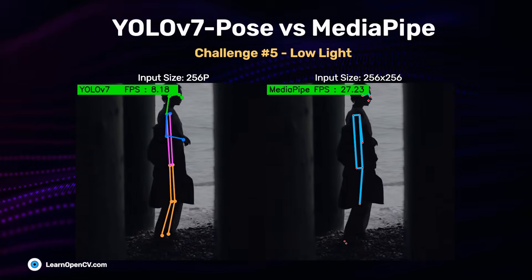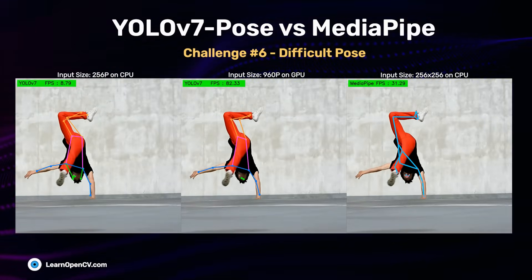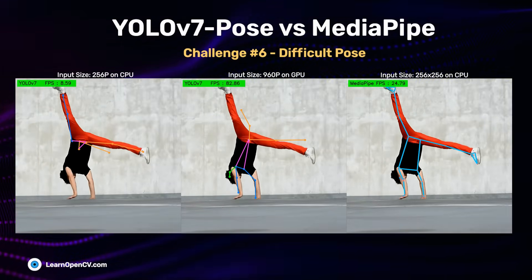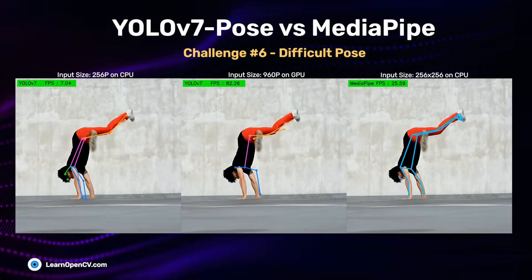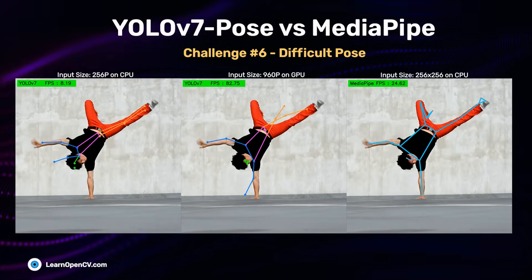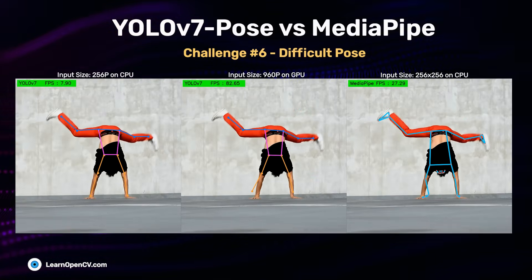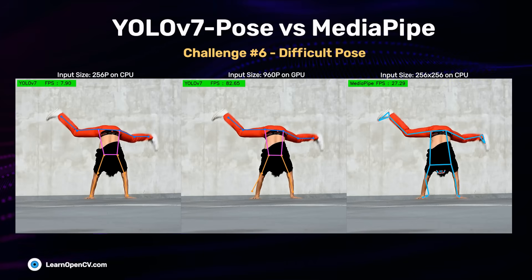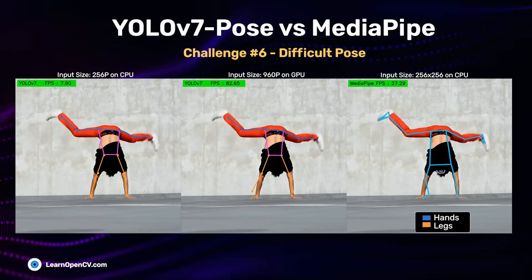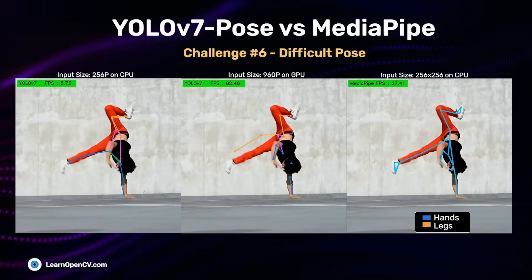Finally, the extreme test: a video with fast motion where the person is upside down. YOLO V7 is unable to track the fact that the person is upside down and keeps predicting keypoints as if the person were upright — note that blue lines indicate arms and orange lines indicate legs. MediaPipe completely outperforms YOLO in this video for both input sizes.